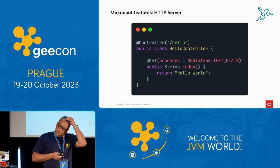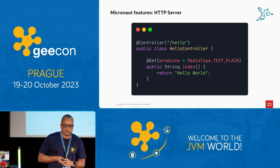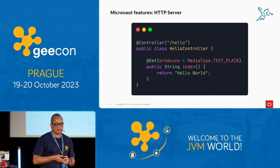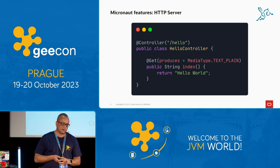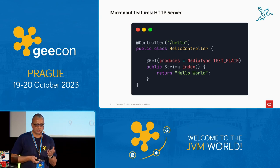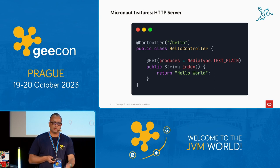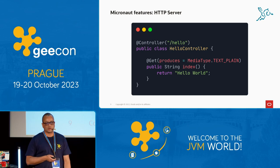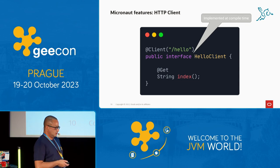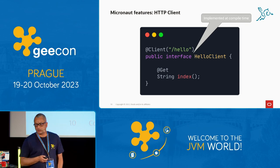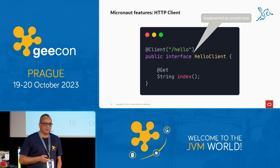The embedded HTTP server is there, as with other frameworks. A classic example: you have the annotation for your controller, a method supporting an HTTP GET verb, and producing the respective MIME type — text/plain, for example. With Micronaut 4, we support the new JDK HTTP client as well. The interfaces are implemented at compile time, providing many benefits.